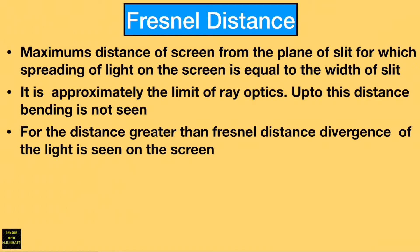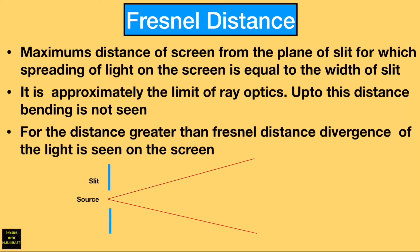Now let us see everything we have discussed with the help of a diagram. This is the single slit and we have a monochromatic source here that produces light of a single wavelength. This is the light produced by the monochromatic source, spreading along the two lines shown here. If the light does not bend or does not enter into the geometrical shadow region, you can see these two blue lines which are parallel to each other, indicating whether the light has entered the geometrical shadow region or not. We will choose positions of the screen at different locations, starting from away from the slit and moving towards the plane of the slit.